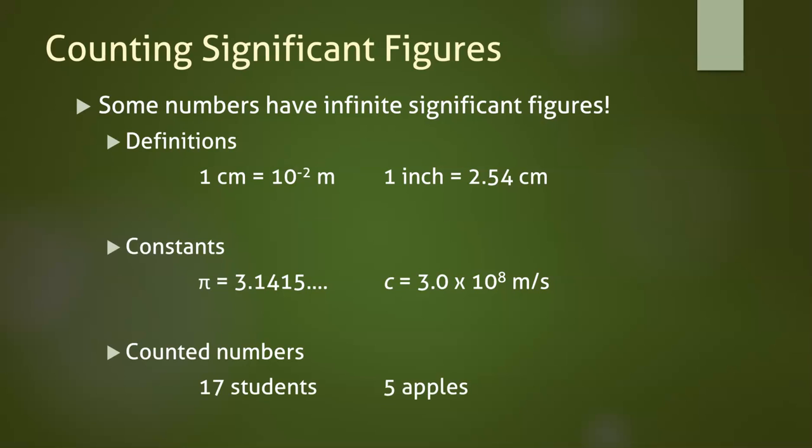The last exception group includes any number that is counted as opposed to measured. All three of these groups contain numbers that are perfectly exact.